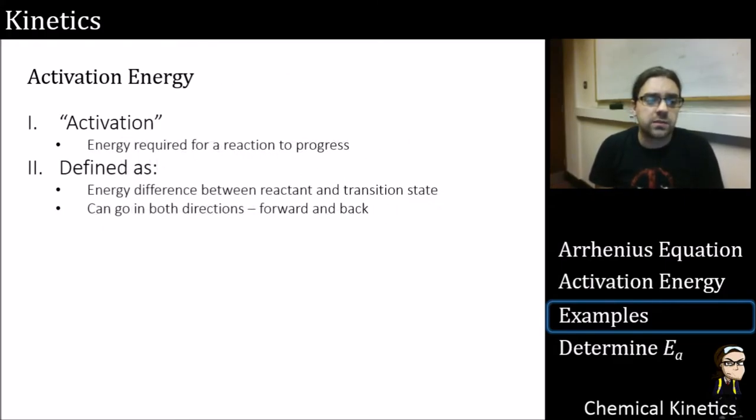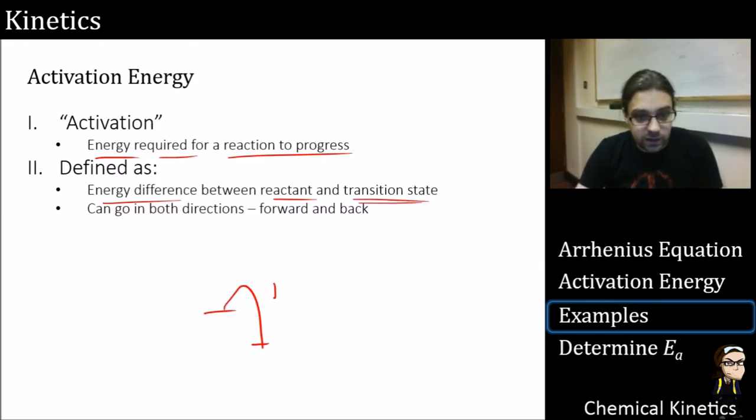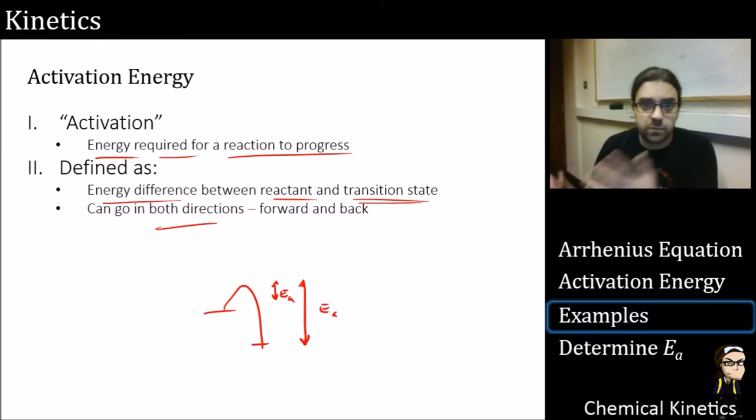Let's recap activation energy. It is the energy required for a reaction to progress. And it is defined as the energy difference between the reactant and its transition state. So it is that energy there or because it can go in both directions, forward and backwards, it's that energy. So we can have two different values and they contribute to where an equilibrium would lie.